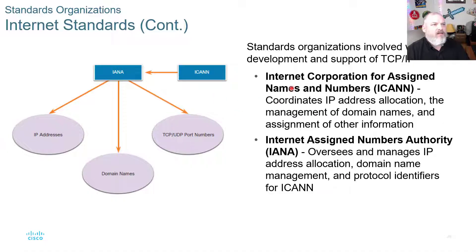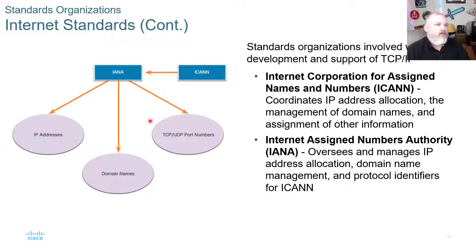ICANN is the Internet Corporation for Assigned Names and Numbers — web domain names originate from ICANN. Then you have the IANA — the Internet Assigned Numbers Authority — which manages IP addresses, domain names, and TCP and UDP port numbers.